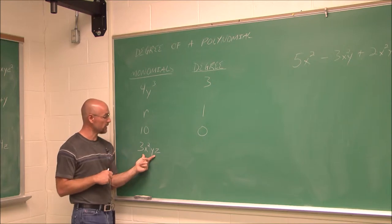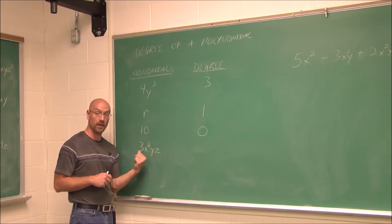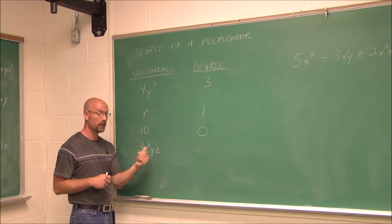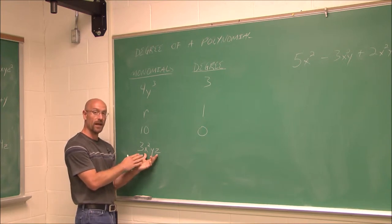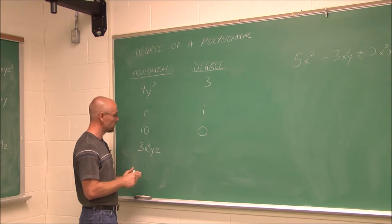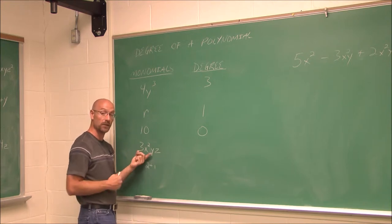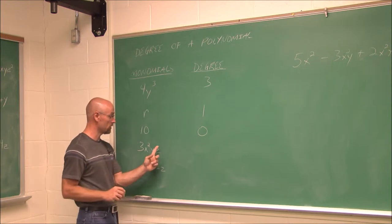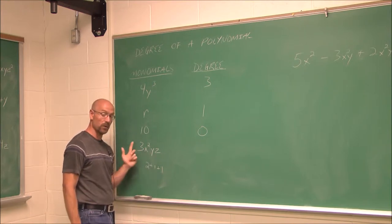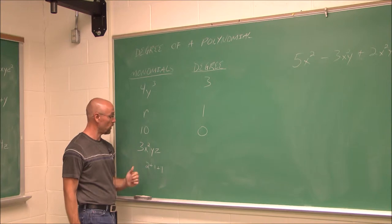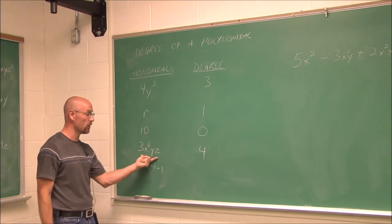For a monomial with more than one variable, like 3x squared y z, we sum all the powers of the variables. We have a power of 2 for x, assume power of 1 for y, and power of 1 for z. So 2 plus 1 plus 1 equals 4. The degree of this monomial is 4.